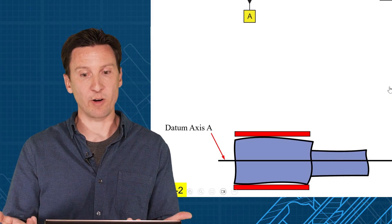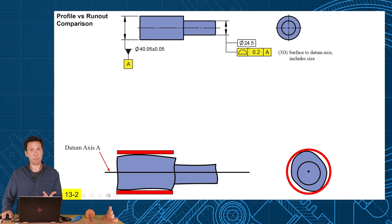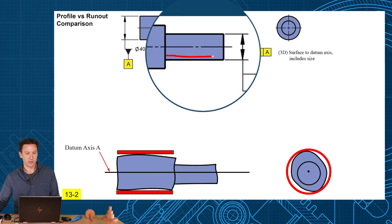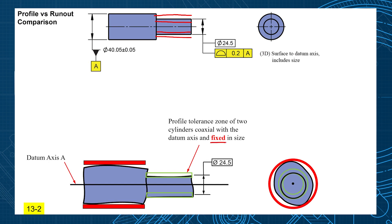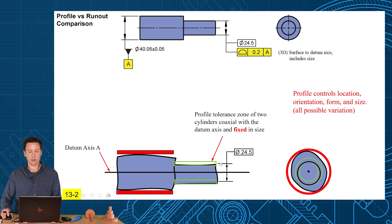So let's first start with profile tolerance. So profile tolerance, we have a basic diameter of 24.5, and this creates a tolerance zone that wraps around the true profile, around the surface. So that's going to be 0.1 in and 0.1 out. Then it's going to wrap around so you're going to get a tolerance zone of 0.1 out and 0.1 in. So it creates a tolerance zone of two coaxial cylinders that are centered around that datum axis. And the key word here is they're fixed in size. They're centered around the basic diameter of 24.5.